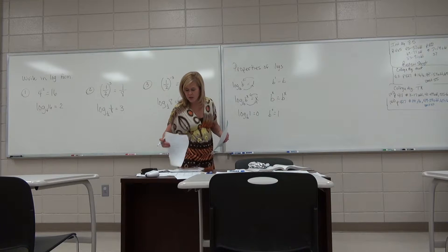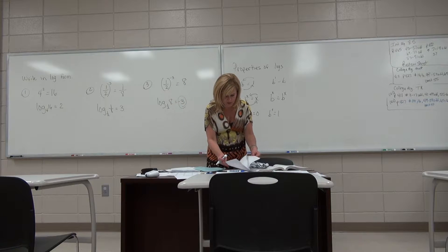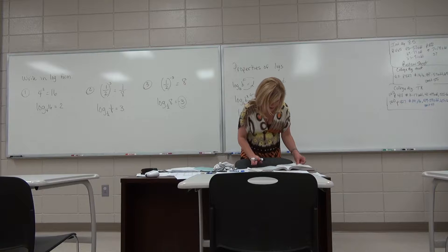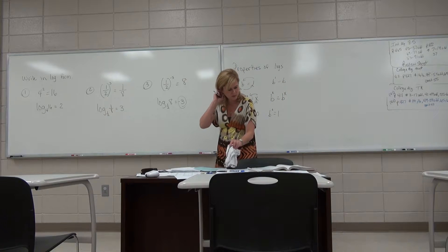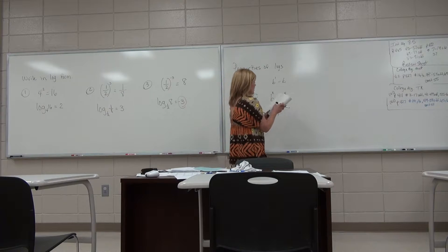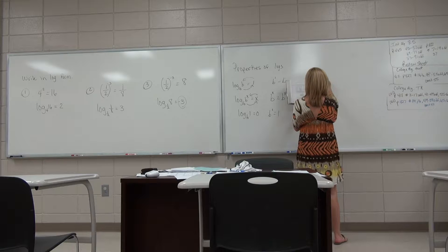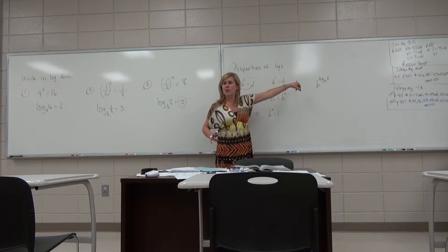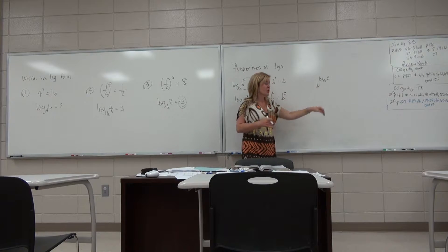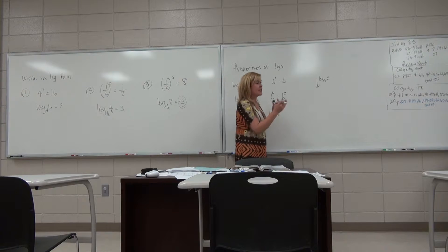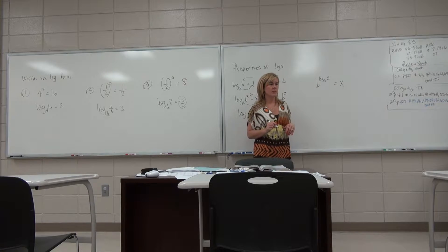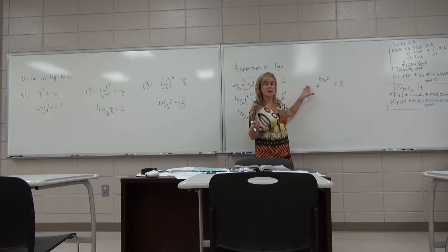Another property showing how they cancel: if you have b to the log base b of x, it's still an exponential function. The base of the exponential and the base of the logarithm are the same. Because they're inverses, they take each other out — they cancel, and your answer is just x, whatever's in that argument position. These bases undo each other.